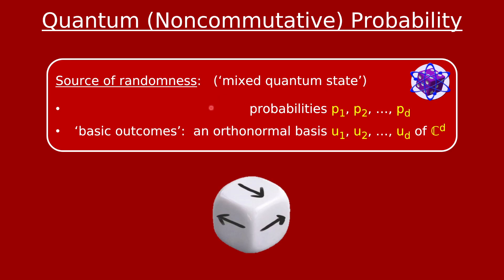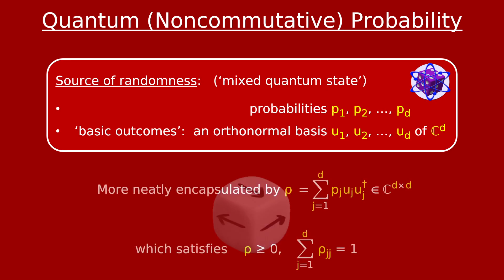You can really think of this quantum die as just like a regular old die with d faces, with each face associated to one of these unit basis vectors u1 through ud. If you already know a little about quantum, you might think that a quantum state is supposed to be just one unit vector — one vector in Hilbert space. That's what's known as a pure quantum state. But throughout these videos I'm going to be talking about the most general kind of quantum state, which is this mixed quantum state — a probability distribution over pure quantum states. So we'll be thinking about quantum states as probability distributions over the vectors in a basis.